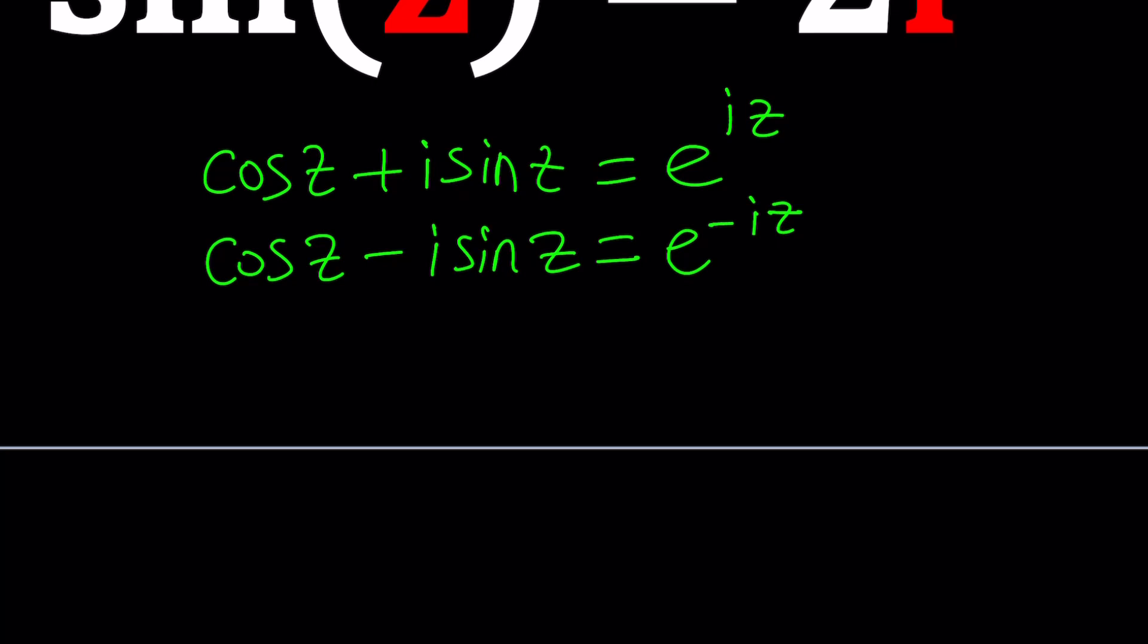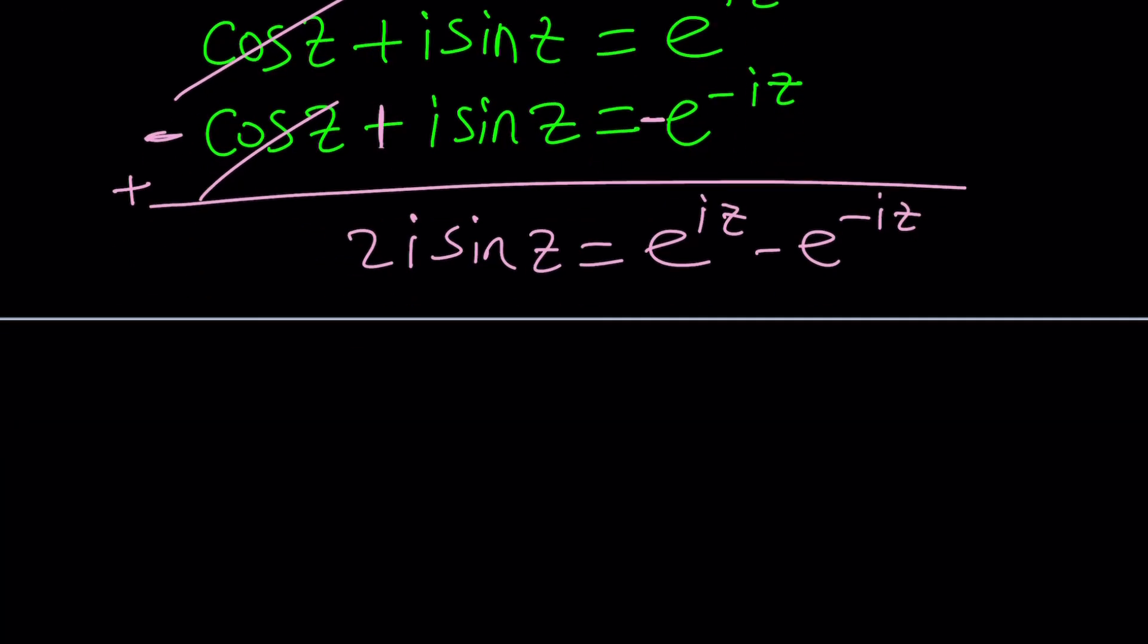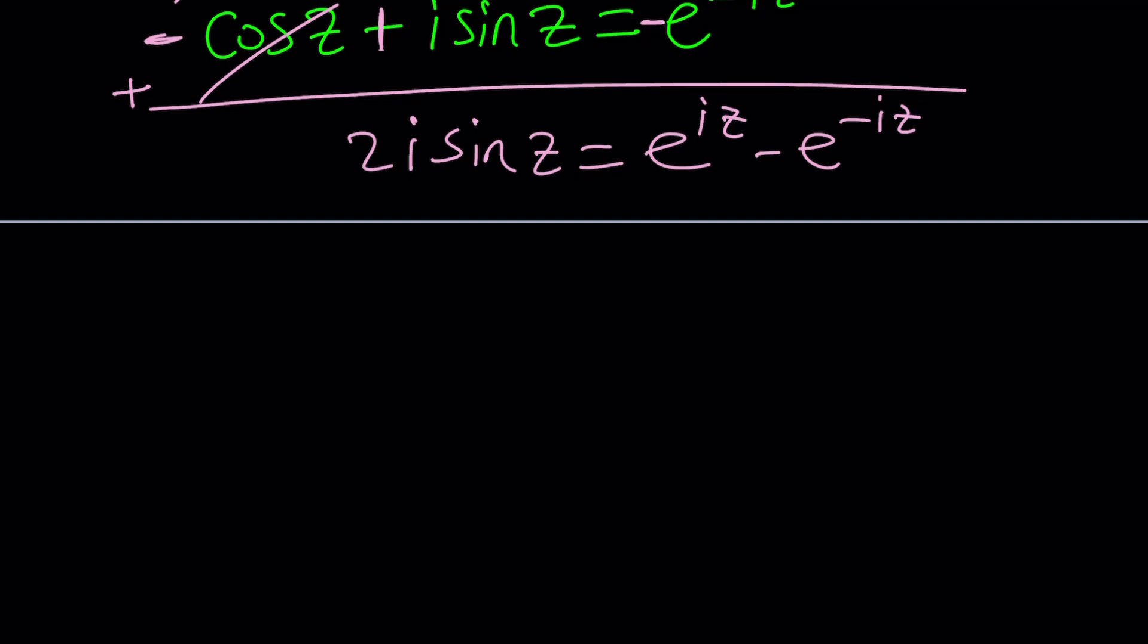And now I want to get sine z so I would get rid of the cosine. So let's go ahead and negate the second equation and add. In other words we're subtracting the second one from the first one. Cosine cancels out. We end up with 2i sine z equals e to the i z minus e to the negative i z. If you added these equations directly you would get the cosine z from there.